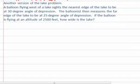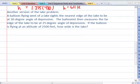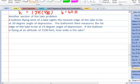On this problem, I want to read the problem first. The balloon is flying west of a lake and it sights the nearest edge of the lake to be a 30-degree angle of depression.